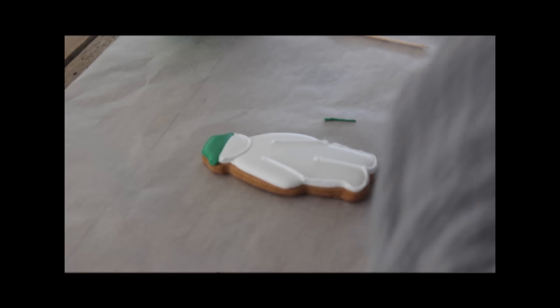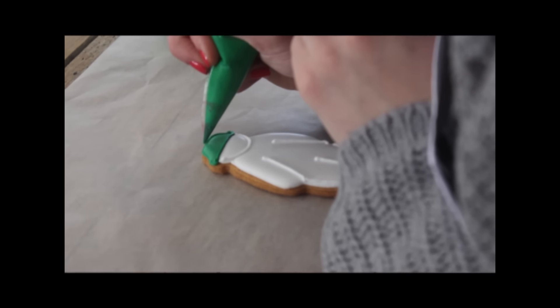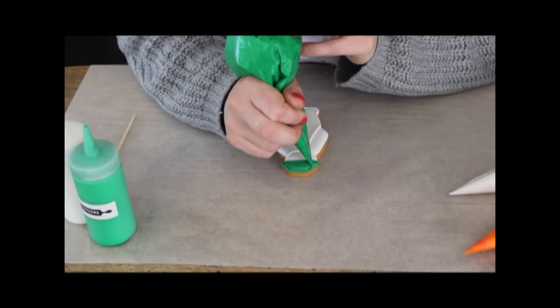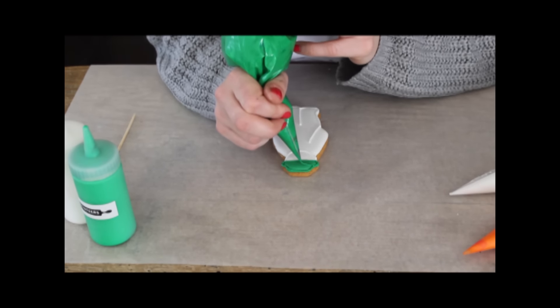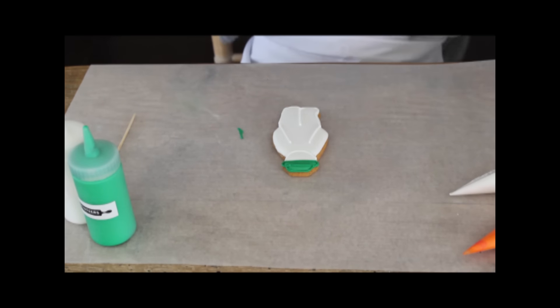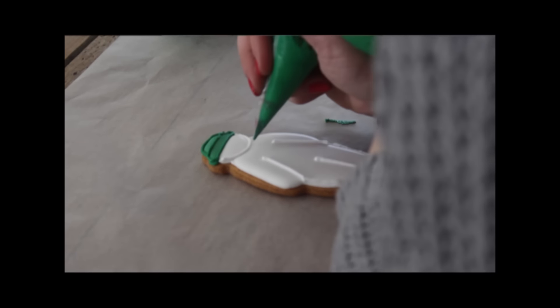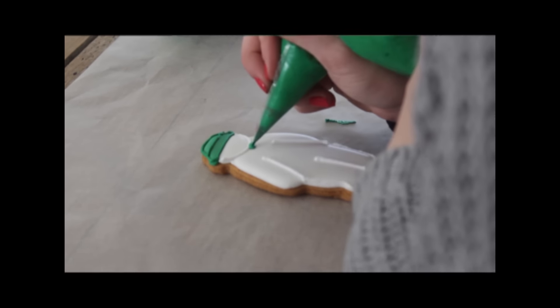You want to go ahead and outline his hat as well. Just test your line. We're just following the line that you created. Now we can just give him a little bow tie. Just really simply create a blob.